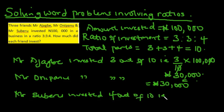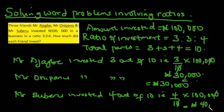Mr. Suberu invested 4 over 10 multiplied by one hundred thousand naira. The zeros cancel and he invested forty thousand naira. So Mr. Ajakbe invested thirty thousand naira, Mr. Unipan invested thirty thousand naira, and Mr. Suberu invested forty thousand naira. When you add all of these together you get one hundred thousand naira.